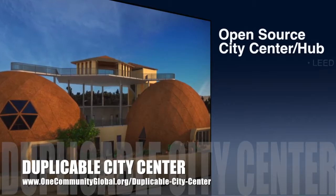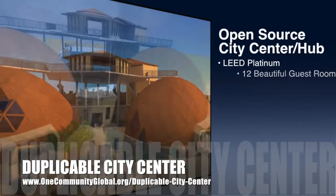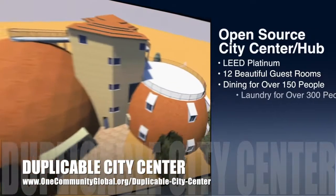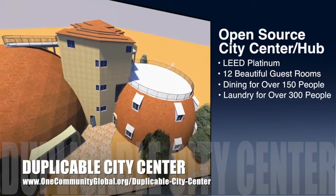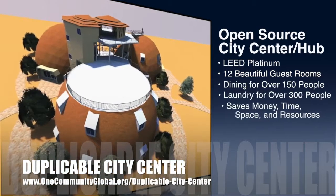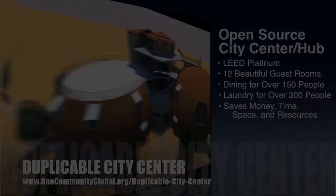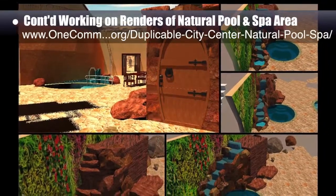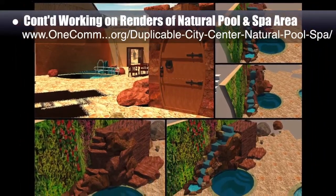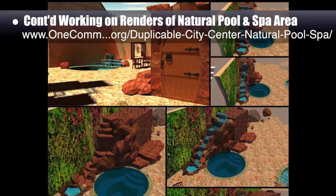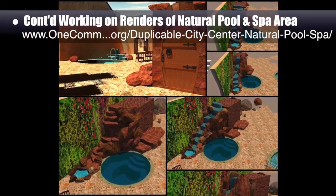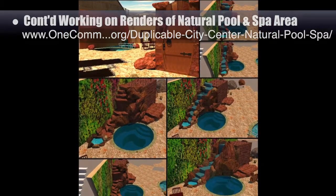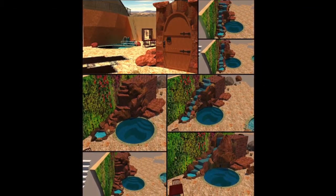OneCommunity is also creating an open source duplicable city center designed to be LEED Platinum certified, provide 12 guest rooms, dining for over 150 people, and laundry and recreation space for over 300 people — all while saving money, time, space, and resources. This week, the core team continued working on renders for the natural pool and spa area, with a focus on creating three different designs for the waterfall, arched stonework around the mechanical room door, and a small pond near the waterfall.